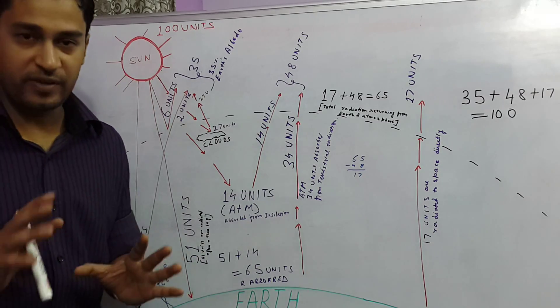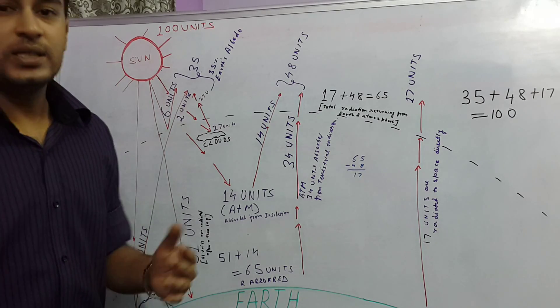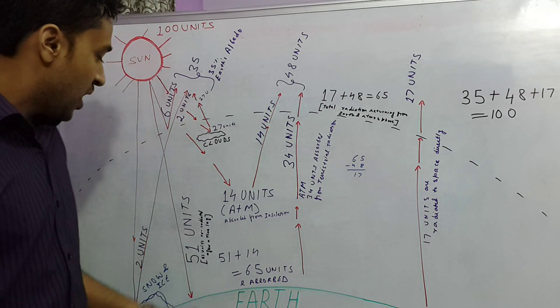Now out of the remaining 65 units, 51 units are actually absorbed by the earth's surface and the remaining 14 units are absorbed by the atmosphere.